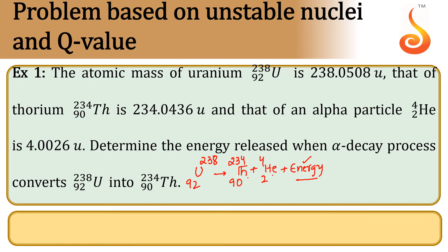Let us calculate the sum of masses of thorium and helium. The sum is 234.0436 atomic mass units plus 4.0026 atomic mass units, which gives us 238.0462 atomic mass units. This is the sum of masses of thorium and helium.